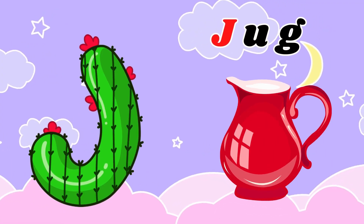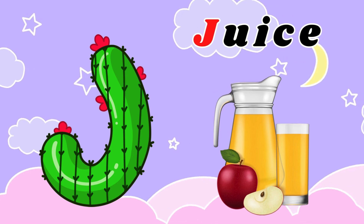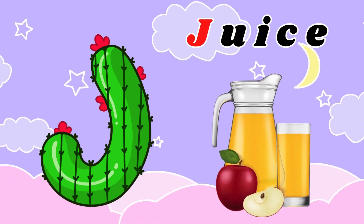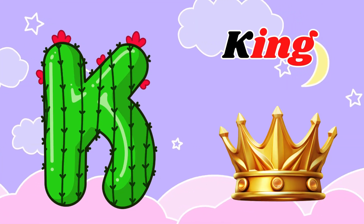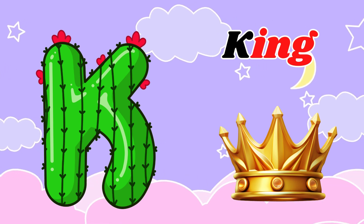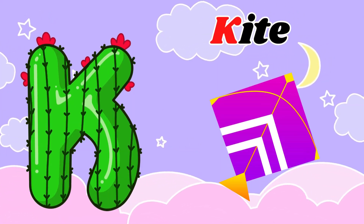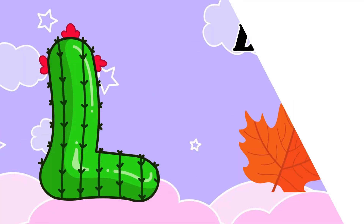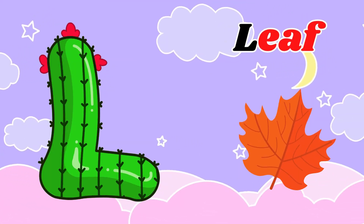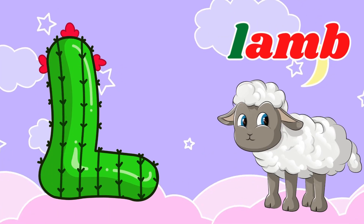J for Junk, J for Juice. K for King, K for Kite. L for Leaf, L for Lamb.